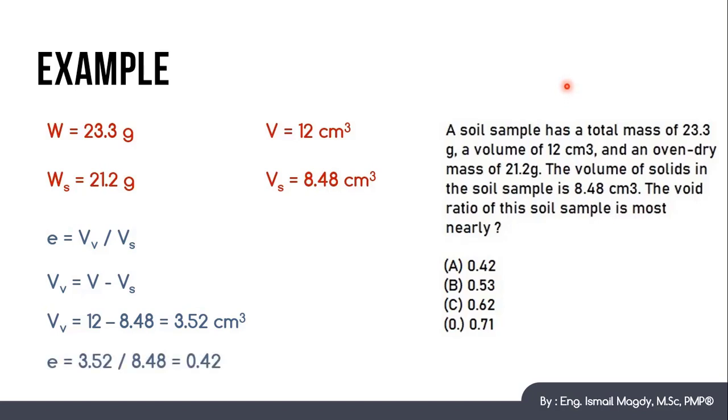So this means that E which is the void ratio equals 3.52 over 8.48, which equals 0.42 and our answer will be A which is 0.42.